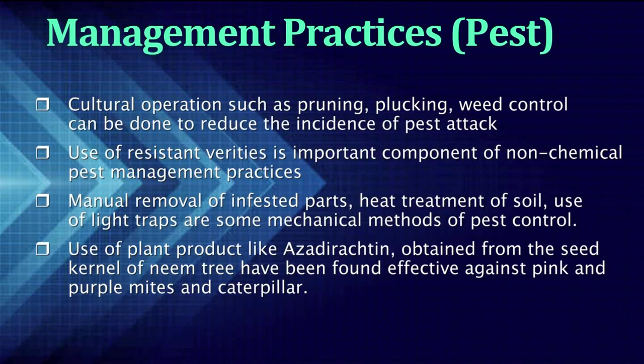Now, come to the management of tea diseases and pests. For pest management, there are various methods followed in various tea-growing regions. To limit pesticide use, cultural and other non-chemical management practices can be followed — such as pruning, plucking, and weed control to reduce pest incidence. Use of resistant varieties is an important component of non-chemical pest management. Manual removal of infested parts, heat treatment of the soil, and use of light traps are mechanical control methods. Use of plant-produced products like azadirachtin, obtained from the seed kernel of the neem tree, has been found effective against pink and purple mites and caterpillars.